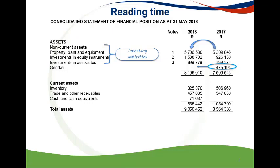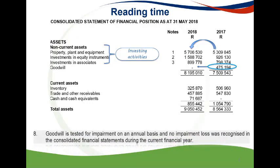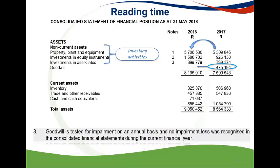In this scenario, the subsidiary Cabinet Limited was disposed of, and all of the goodwill is attributable to Cabinet Limited as indicated in note 5 of the additional information. Furthermore, it is clearly stated in the additional information that no impairment on goodwill was recognized during the current year.